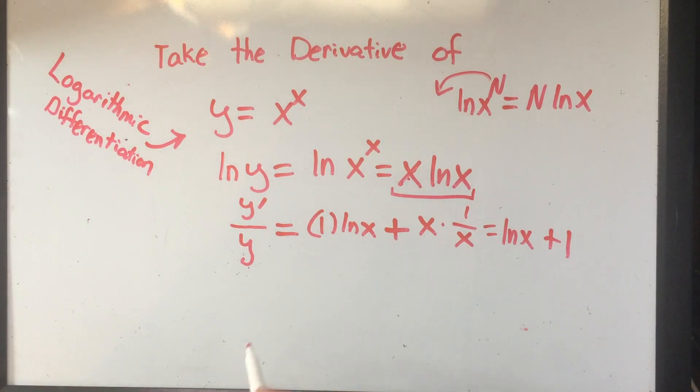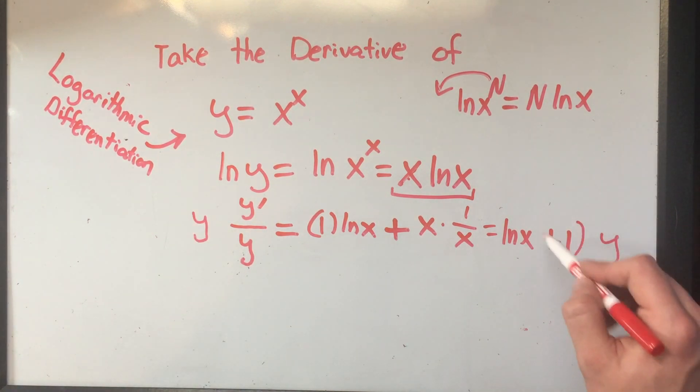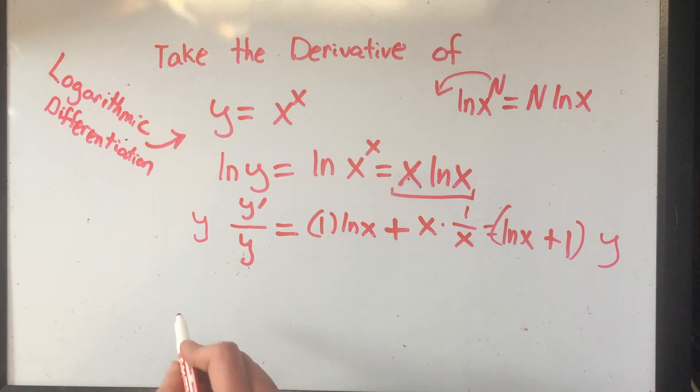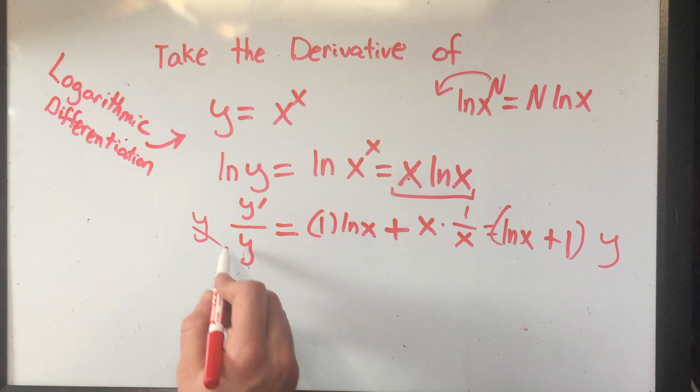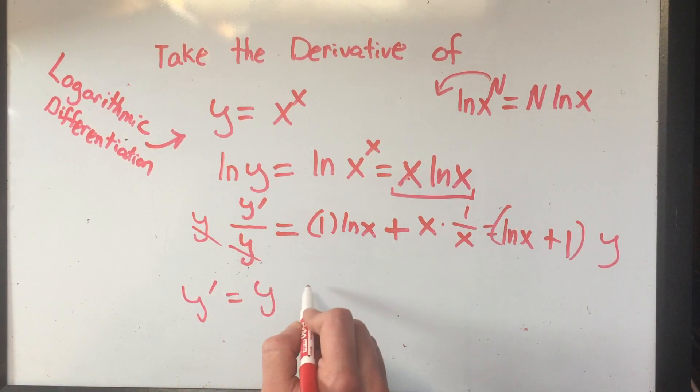Y prime is what we want. So if I multiply both sides of this equation by y, I'll have solved for y prime. So here I'd cancel the y's. I'd have a y prime. And now I'm just going to write the y right next to it: y times this whole thing, ln of x plus 1.